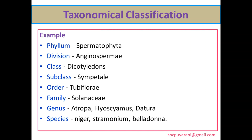The next example is the Solanaceae family. The drugs are Atropa, Hyoscyamus, and Datura — these are the genera. Species are nigra, stramonium, and belladonna. These also come under phylum Spermatophyta, division Angiospermae, class Dicotyledon, subclass Sympetalae, order Tubiflorae, family Solanaceae.